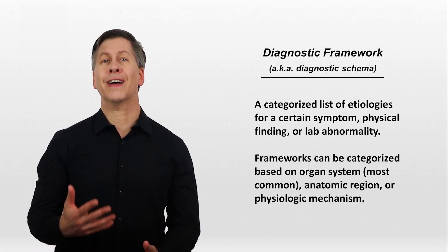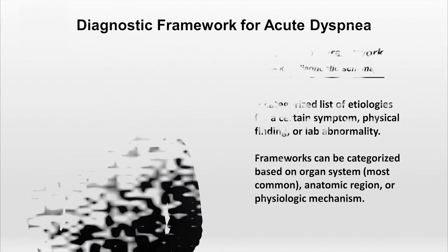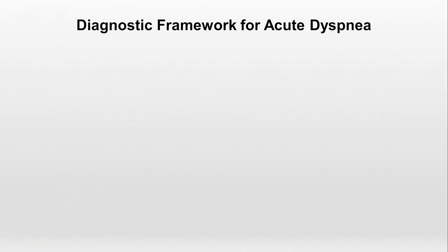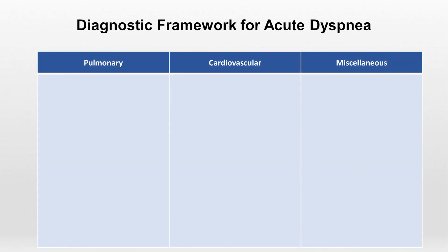So let's take a look at a diagnostic framework for acute dyspnea — dyspnea being the medical term for shortness of breath. I'll start off with an organ system-based framework. We can consider possible etiologies as falling into the pulmonary or cardiovascular systems, and there are plenty of miscellaneous causes too. In the pulmonary system — and don't pay attention to the particular order for now — we can list a pneumothorax, or air within the pleural space around the lung, a pleural effusion, which is fluid within the pleural space, and an exacerbation of either COPD or asthma.